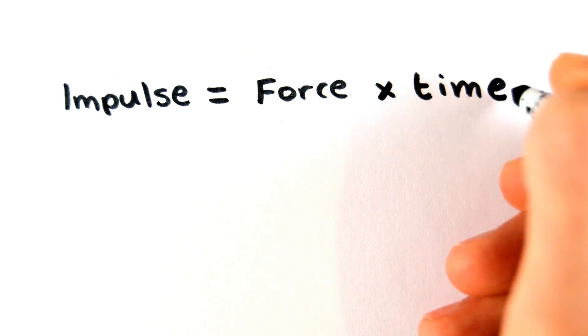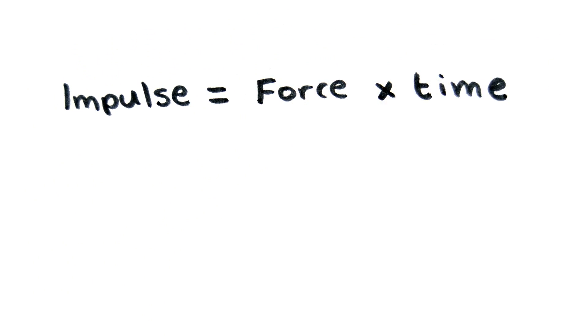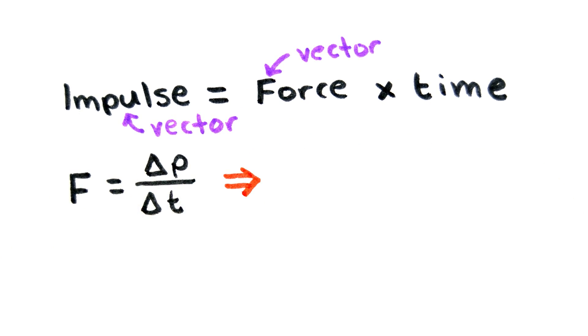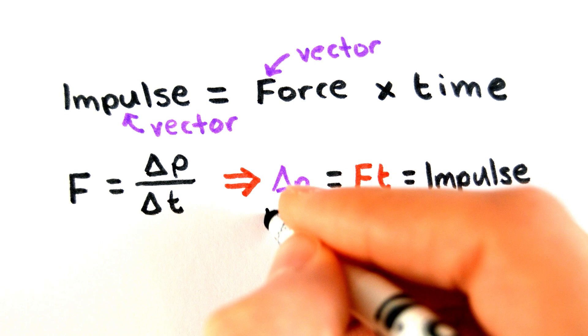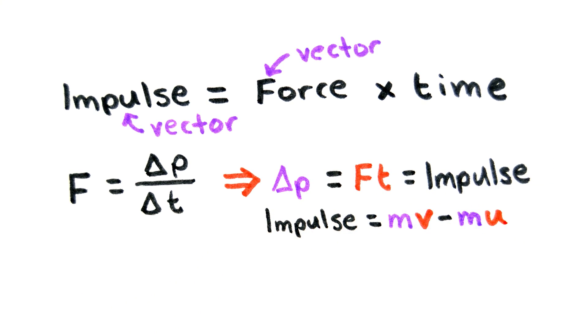Impulse is the force times the time for which the force acts. Since force is a vector quantity, impulse must also be a vector. By rearranging the formula for Newton's second law, you can see that impulse also equals the change in momentum, and is therefore measured in Newton seconds or kilogram meters per second.